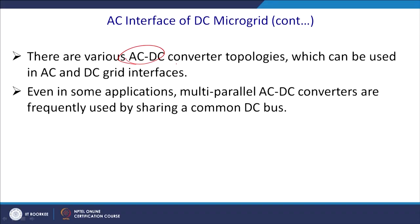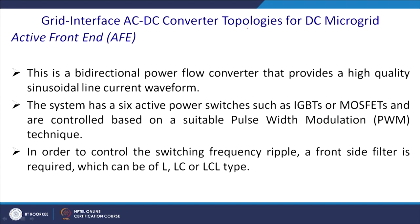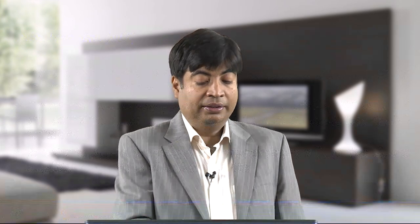For these reasons, there are various AC-to-DC converter topologies which can be used in the AC-DC microgrid interface. In some applications, multi-parallel converters can be used if the power rating requires more than one path, and also to provide redundancy. Multi-parallel AC-to-DC converters are frequently used sharing a common DC bus. The grid interface AC-DC converter topology for the DC microgrid is a bidirectional power flow converter.